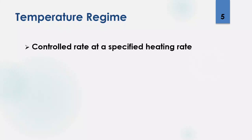What is a temperature regime? It is controlled at a specified heating rate. This means you will give some specific heating rate to the sample. For example, if you want to increase the temperature from room temperature to 100 or 150 degrees centigrade at 2 degrees per minute, that means after each minute a 2-degree rise in temperature will occur. For example, initially you have a room temperature of 25 degrees centigrade; after 2 minutes the temperature increases to 27, then 29, and so on. So this is a specified, controlled heating rate.